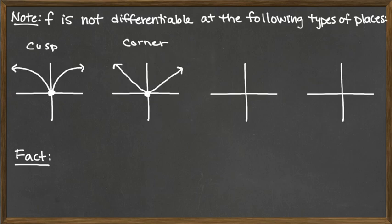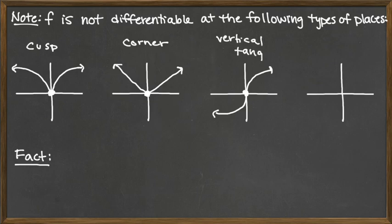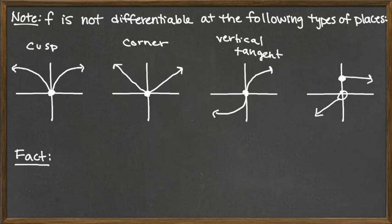At that corner point is the one place where the function is not differentiable. We could also have vertical tangents — a function where at x equals 0 we've got a vertical tangent line, and so that x equals 0 is the one place where this would not be differentiable. The last thing we might run into would be at a discontinuity — a piecewise defined function with a jump discontinuity, or any sort of discontinuity — we're not going to have a tangent line. Those are the four things to look for when a function would not be differentiable.